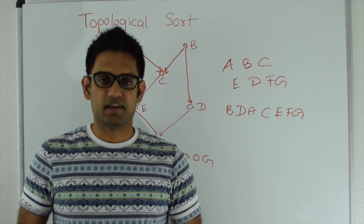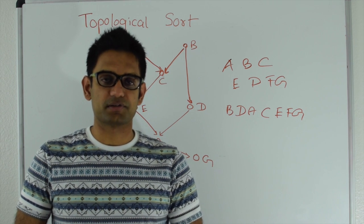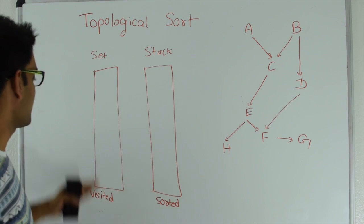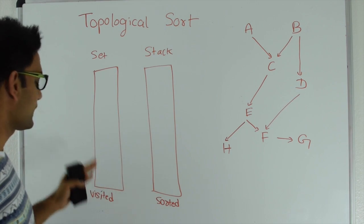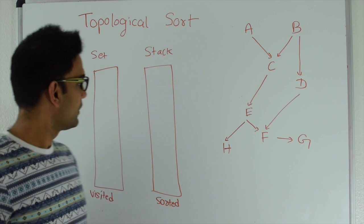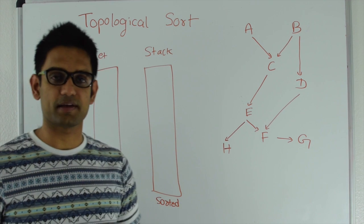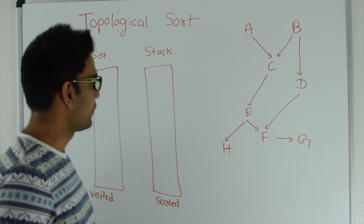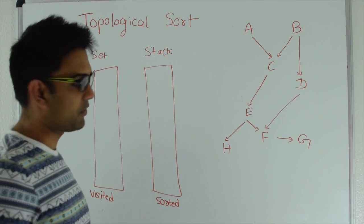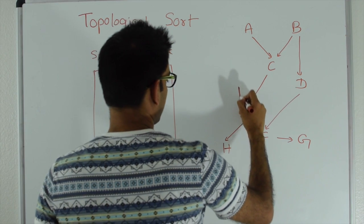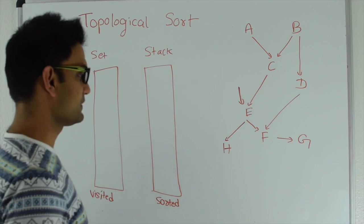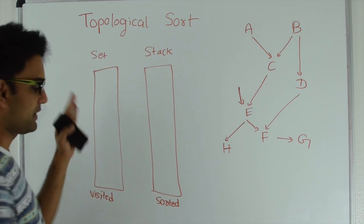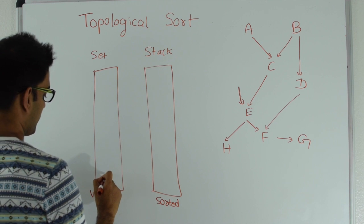Now let's see how we are going to do topological sorting. We have two data structures: a set and a stack. The set holds all the visited vertices while the stack holds all the vertices in topologically sorted order. We start from any node — let's say we start from e. Since e is not in the visited set, we put e into the visited set.